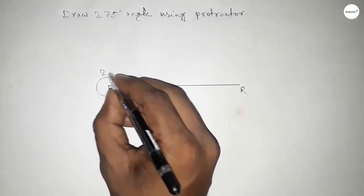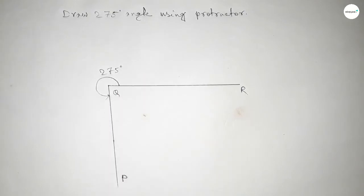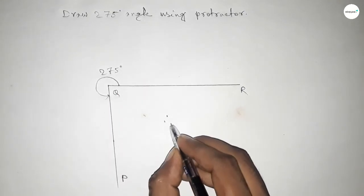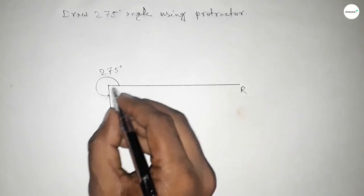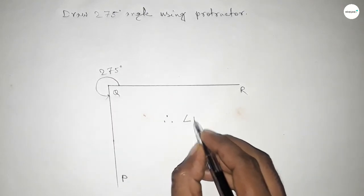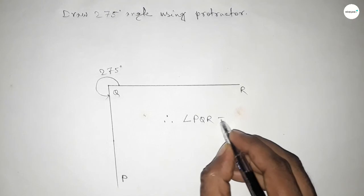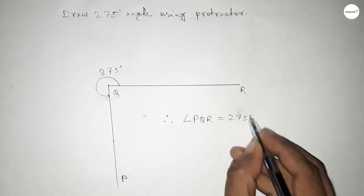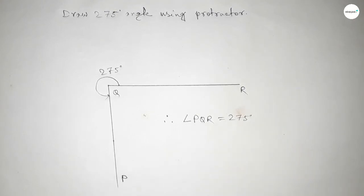This is 275 degree angle. So therefore angle PQR equal to, we can write, 275 degree angle.